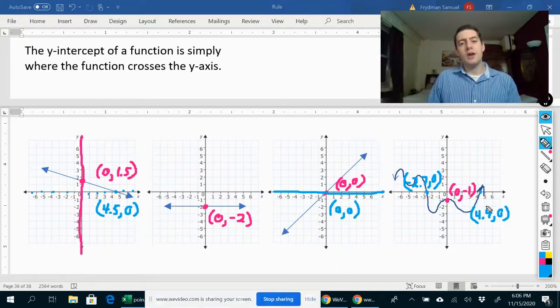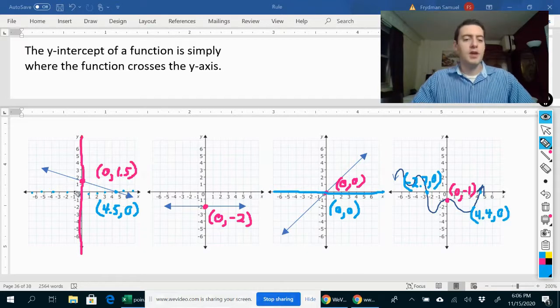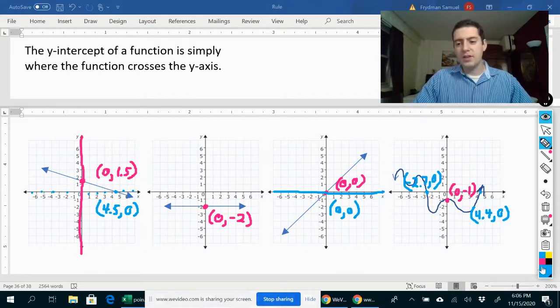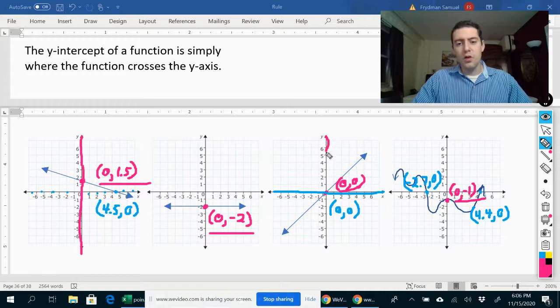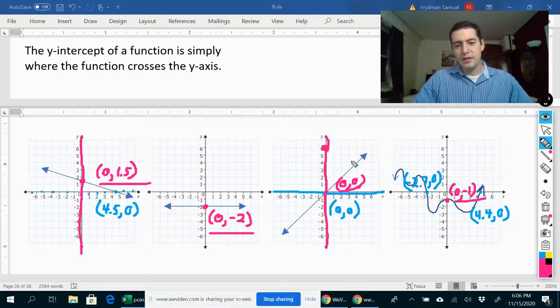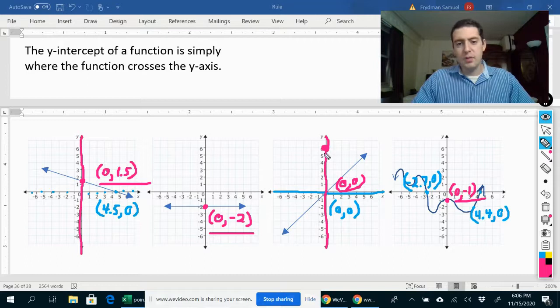But we're mostly going to be talking about the y-intercept. And for all of these y-intercepts over here, you can see that the x-value is always zero, because again, everywhere along the y-axis, x is always zero. For example, this point, even though it's not the y-intercept of this function here, I'll just give an example. What is this point? This point is zero, six.